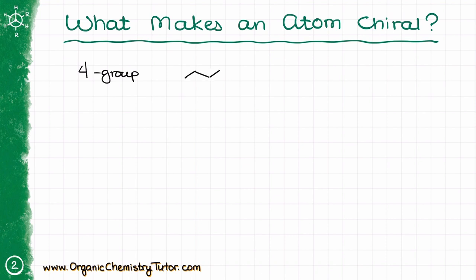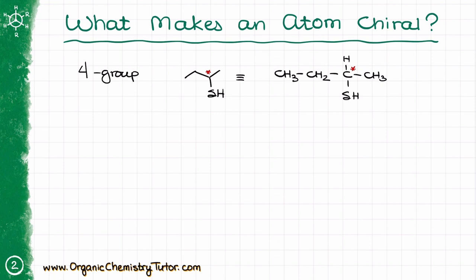Let's look at an example. I have a molecule called ethanethiol. In this molecule, I do have a chiral atom. Let me redraw it as a full Lewis structure: CH3, CH2, then CH(SH), and another CH3. So my chiral atom is connected on one side to an ethyl group, on the other side to a methyl group, then we also have the thiol group, and on top of all that, we have a hydrogen. So we have four different groups around my chiral carbon.